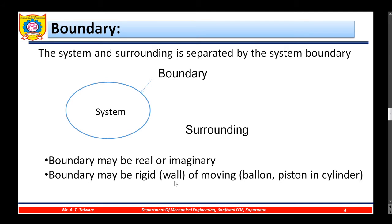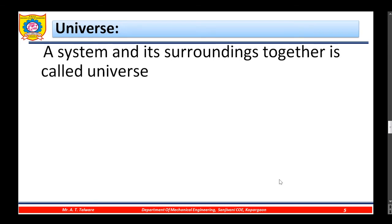Or it could be the moving type of boundary. For example, a balloon — the balloon boundary is flexible, that is, moving. Or, piston inside the cylinder — the piston boundary will be moving. So depending upon the pressure inside the cylinder, the boundary will be moving.